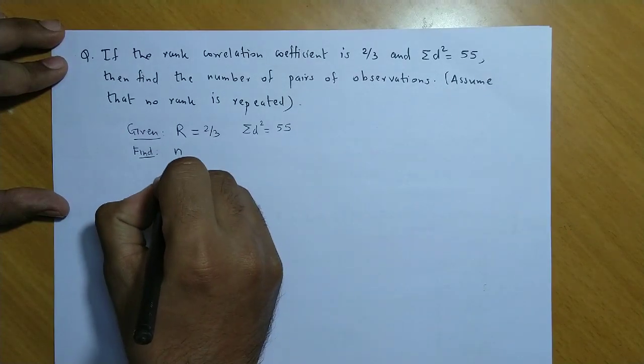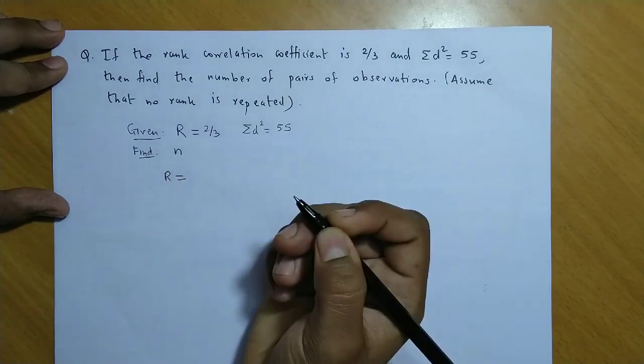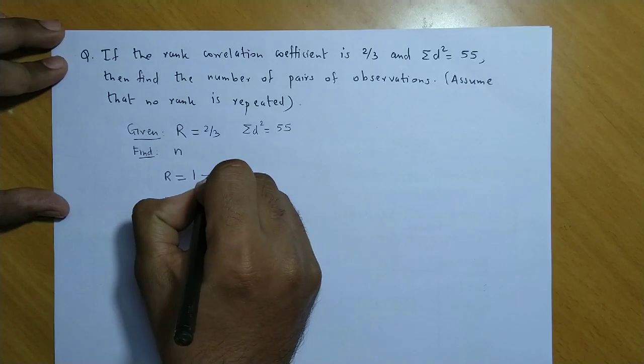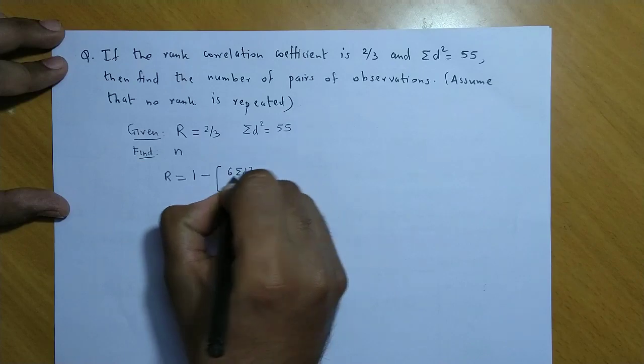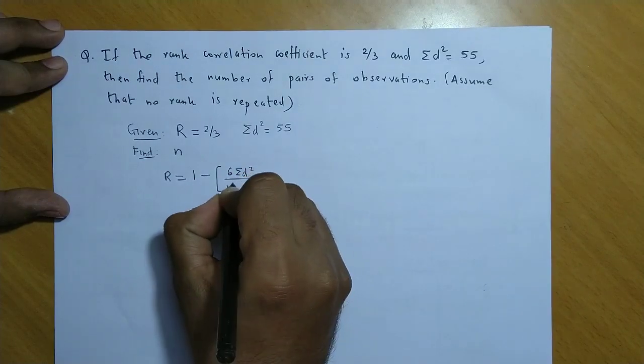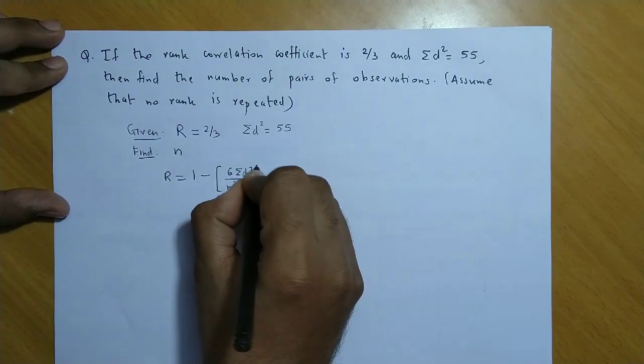Toh, pahle hum R ka formula likh lete hai. R is equal to 1 minus 6 times summation d square upon n cube minus n.